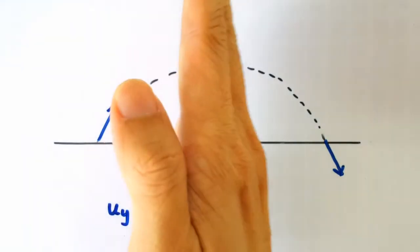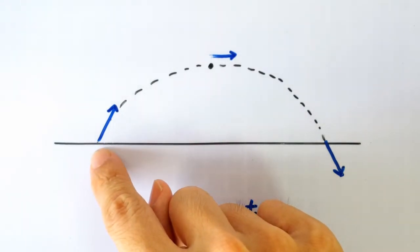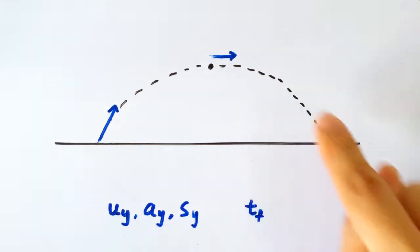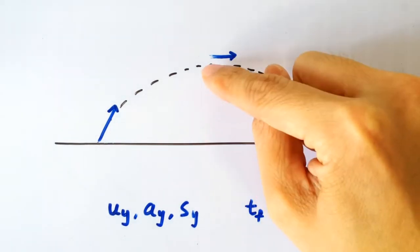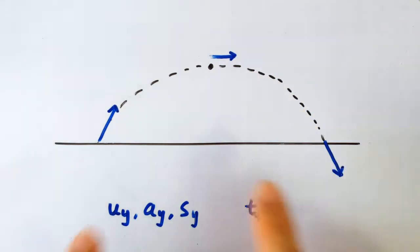projectile motion is symmetrical about the peak. It takes as long for the projectile to go from here to here as it takes to go from here to here. The time taken to go up this height and the time taken to fall down this height is the same, and